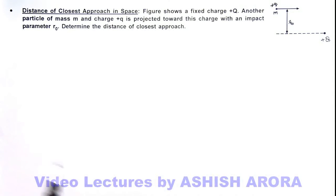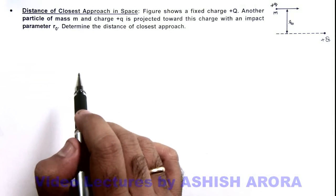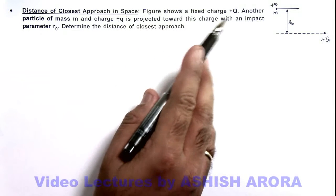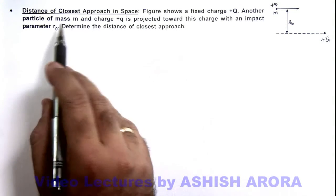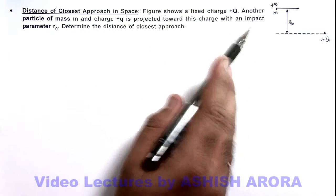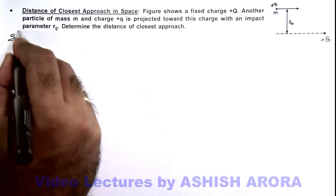In this illustration, we'll study about the distance of closest approach in space. The figure shows a fixed charge +Q. Another particle of mass m and charge +q is projected toward this charge with an impact parameter r₀. We are required to find the distance of closest approach.